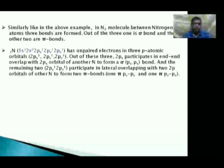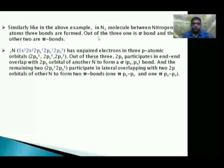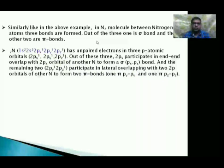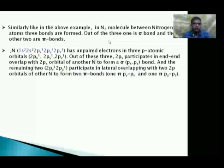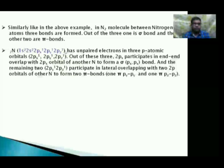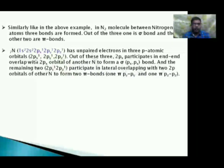Similarly, in the nitrogen molecule (N₂), three bonds are formed between the nitrogen atoms: one sigma bond and two pi bonds. In nitrogen's electronic configuration, there are three unpaired electrons in 2p atomic orbitals — 2px, 2py, and 2pz each have one unpaired electron.